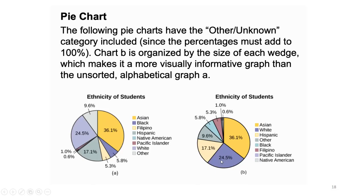One chart is in decreasing order and the other is not arranged in ascending or descending order. Therefore, it is better to use the chart arranged in decreasing order because it is organized more clearly. You can arrange in increasing or decreasing order — like 36, 24.5, 17.1 — this is the difference between the two graphs.